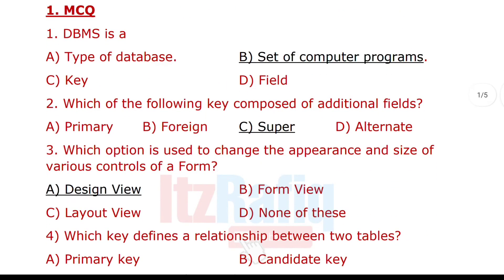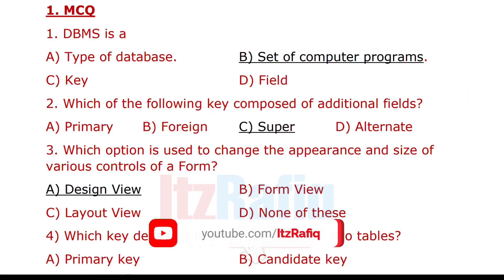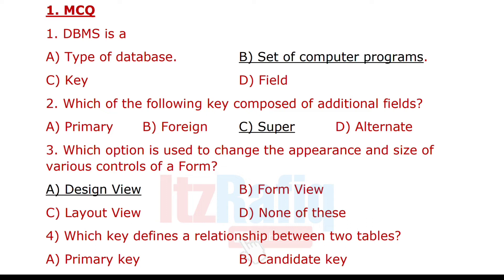First question is MCQ. DBMS — the full form is database management system — is a type of computer programs or software. Number two: which of the following key is composed of additional fields?